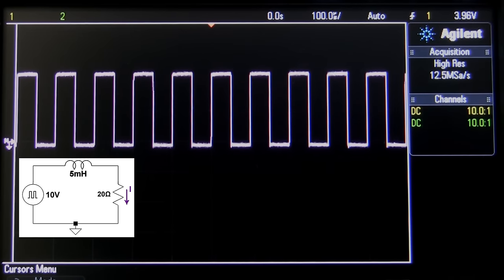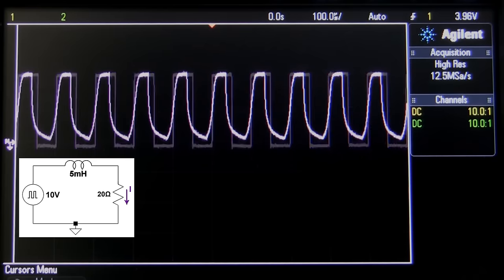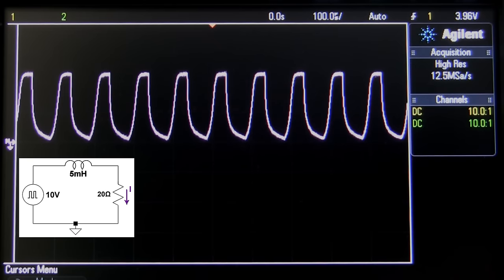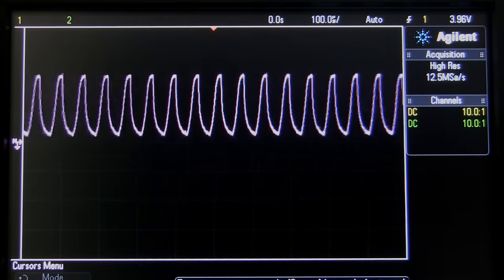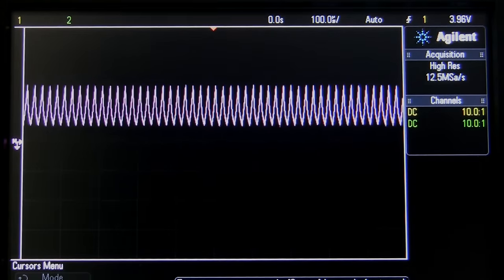Now let's try that again with a higher input frequency of 10 kilohertz. Now it's even more obvious that the inductor is impeding the sudden changes in current. This happens more and more as I raise the frequency of the input wave.